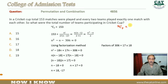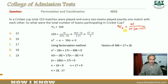If we expand nCr, then the value is n factorial over r factorial into n minus r factorial. So this will expand to n factorial over 2 factorial into n minus 2 factorial. Solving this, we get n into n minus 1 over 2 into 1.